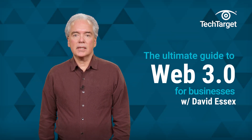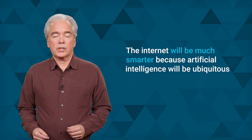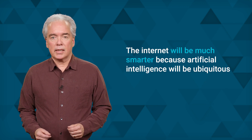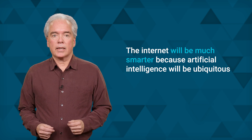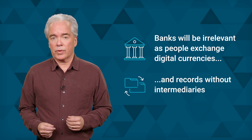What if the Web could conjure up exactly the information you need in the format you want, even before you ask for it? That could someday be the reality with Web 3.0, the next version of the Web. In the Web 3.0 vision, the Internet will be much smarter because artificial intelligence will be ubiquitous. All the world's data will be unified in a so-called semantic Web. Everyday users will have more control over how their personal information is used. Banks will be irrelevant as people exchange digital currencies and records without intermediaries. As businesses prepare for Web 3.0, interest has never been greater.